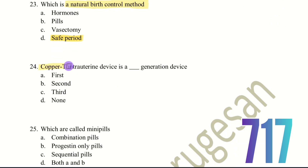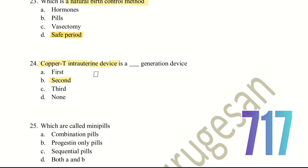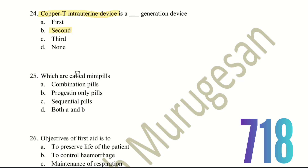Twenty-fourth question: copper T intra-uterine device is which generation device? The choices are first generation, second generation, third generation, or none. Copper T IUD belongs to the second generation device.